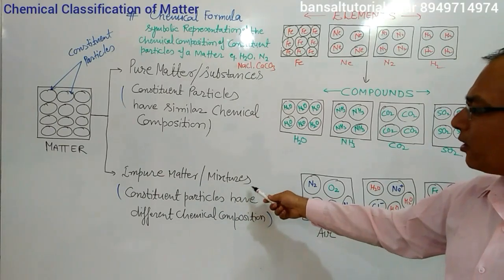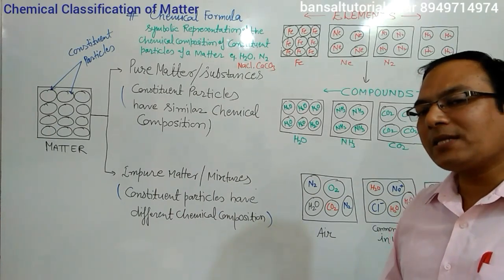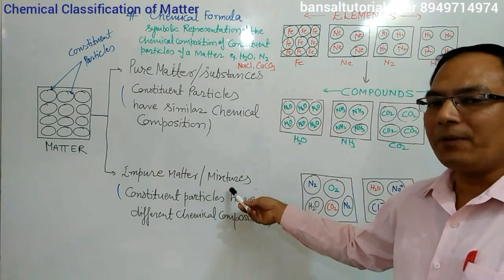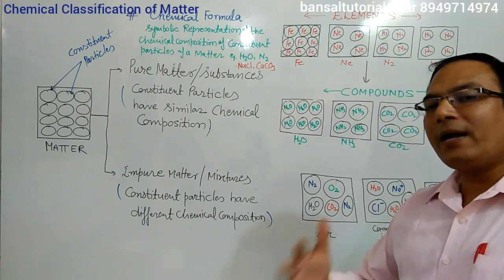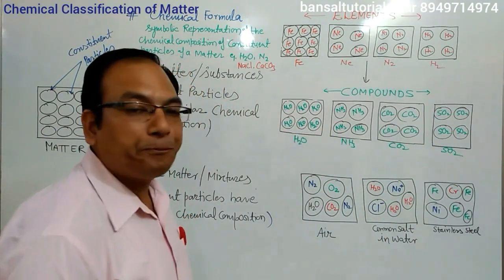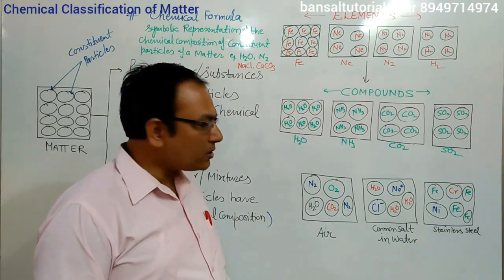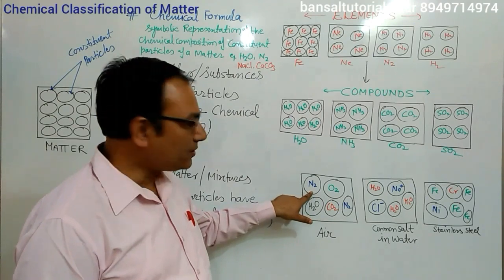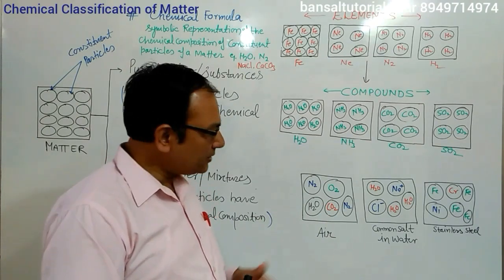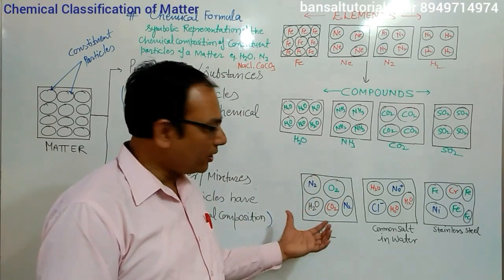In the case of impure matter or mixtures, when different pure substances are mixed together, the new matter formed is called impure matter or mixtures. It means they have different kinds of particles which have different chemical compositions. For example, the most common example is air. Air is a mixture of gases because it is composed of nitrogen, oxygen, carbon dioxide, water, and many more gases. Air is composed of different kinds of particles having different chemical compositions, so it is a mixture.